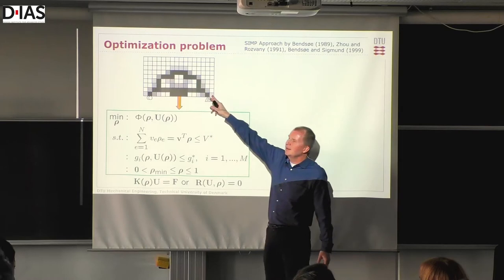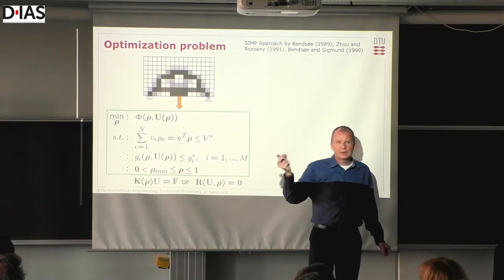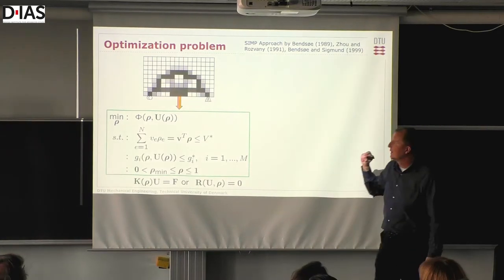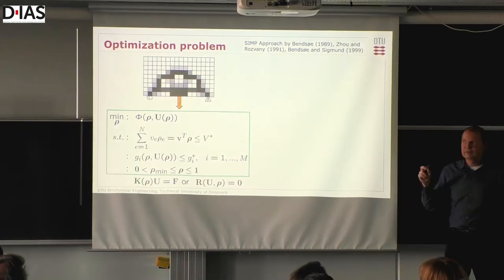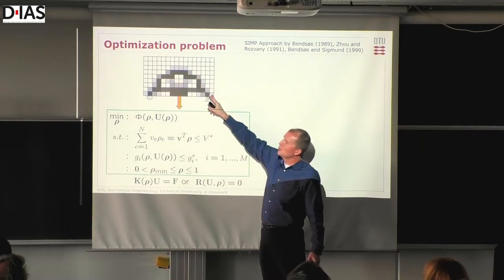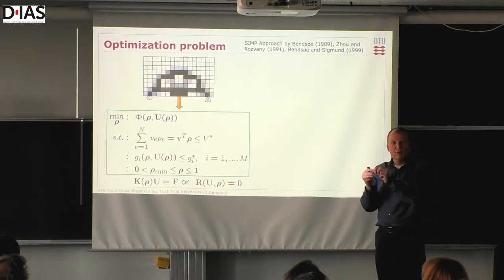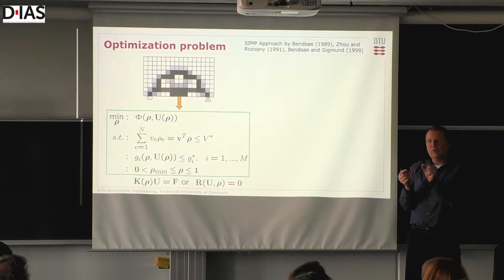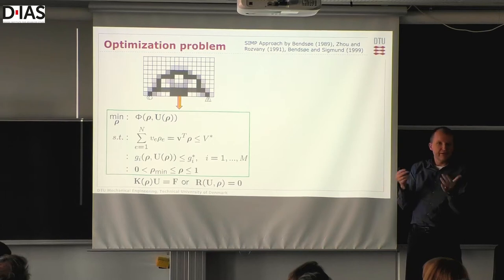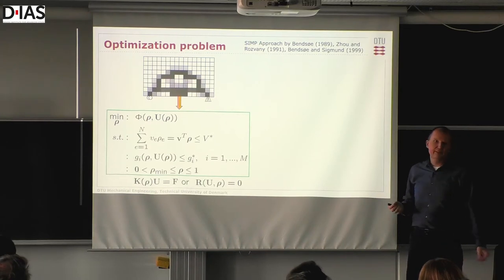Essentially, we have a design domain and we want to determine should each pixel or voxel be filled with material or not. That gives us a combinatorial problem that is almost impossible to solve. Instead, we introduce an artificial density design variable in each element that can go smoothly between 0 and 1 — 0 meaning no material, 1 meaning solid material. The advantage of having a continuous variable is we can compute gradients and thereby do search directions that take us towards optimal design very efficiently.